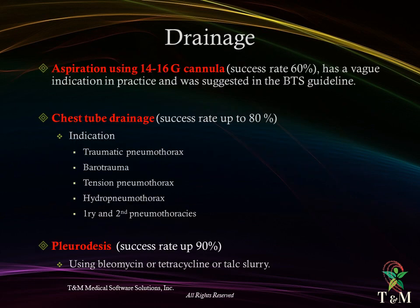Drainage can be achieved by aspiration using a 14 to 16 G cannula, with a success rate of 60%, suggested by British Thoracic Society guidelines though its indication in practice is vague. Chest tube drainage has a success rate up to 80% and is indicated in traumatic pneumothorax, barotrauma, tension pneumothorax, hydropneumothorax, and primary and secondary pneumothorax. Pleurodesis has a success rate up to 90% and can be achieved by chemical agents such as bleomycin, talc slurry, or tetracycline.